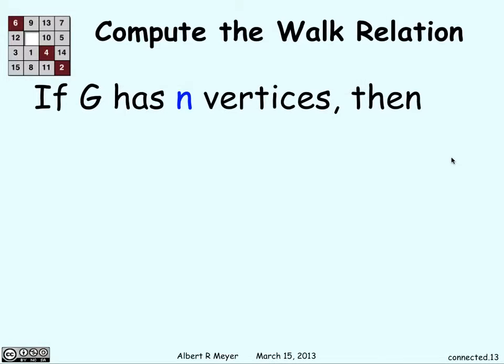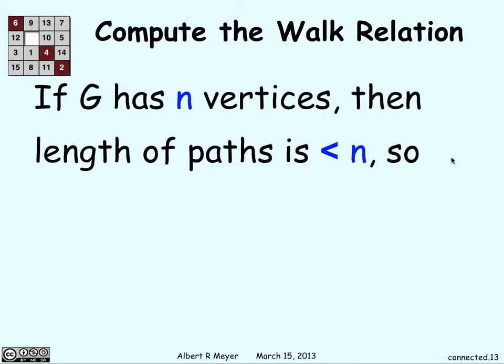Now let's compute the walk relation using what we've just defined. So G has n vertices. So the length of paths are going to be less than or equal to n. If you just go in a straight line from one thing to another, passing through each possible vertex, at most you're going to get n minus 1 length. Because you're going to pass through n vertices, so there's n minus 1 edges connected there.